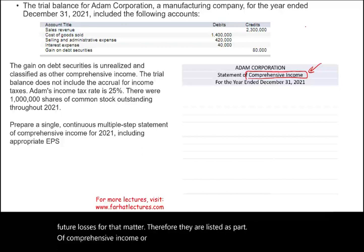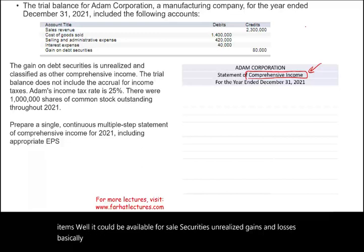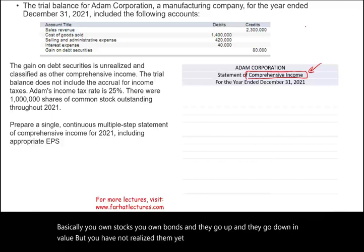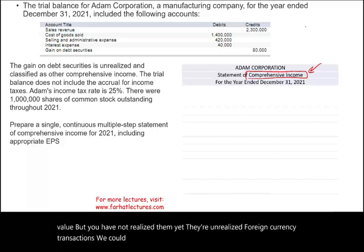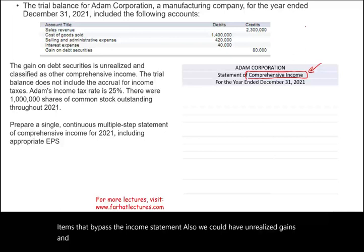Other comprehensive income items could include available-for-sale securities — unrealized gains and losses. You own stocks and bonds that go up and down in value but have not been realized yet. Foreign currency transactions, pension and retirement plan gains and losses, and unrealized gains and losses from derivative instruments are all items that bypass the income statement.